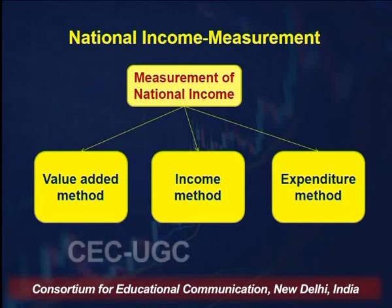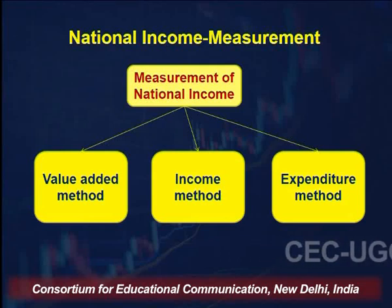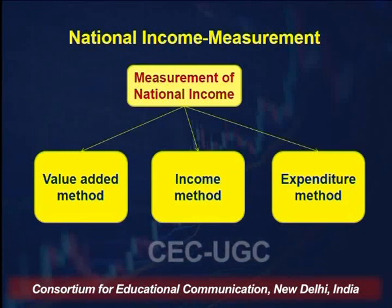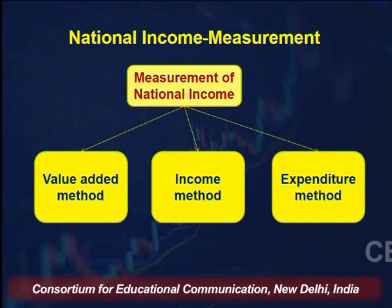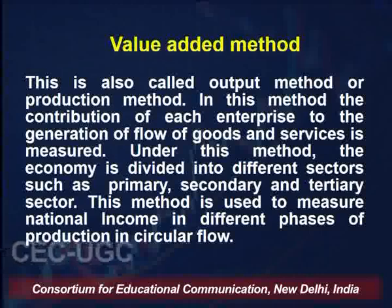Next we come to the measurement of national income. There are three methods: the value added method, the income method, and the expenditure method. The value added method is also called the output method or production method. In this method, the contribution of each enterprise to the generation of flow of goods, products, and services is measured. The economy is divided into different sectors: primary, secondary, and tertiary.